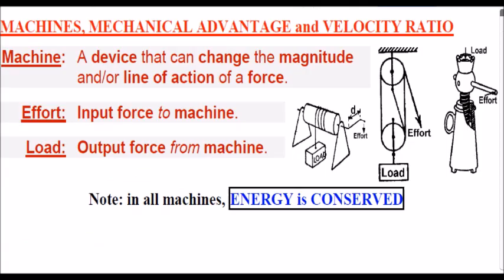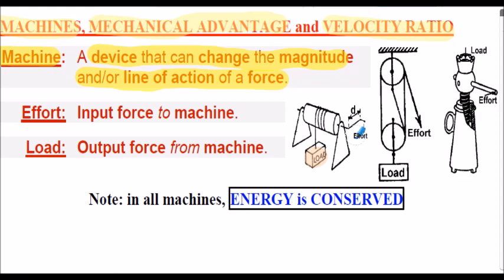Let's now consider some definitions of machines, mechanical advantage, and velocity ratio. A machine is defined as a device that can change the magnitude and/or line of action of a force — for example, a hoist raising a load when an effort is applied, a pulley system raising a load, or a screw jack raising a load for an applied effort. The effort is considered the input force to the machine, and the load is essentially the output force from the machine.